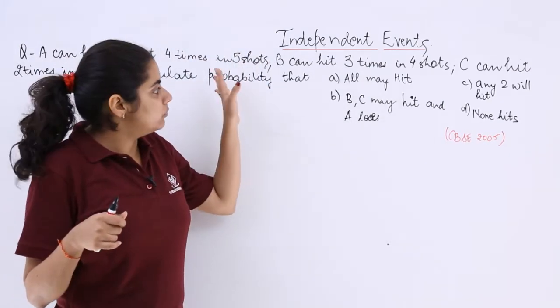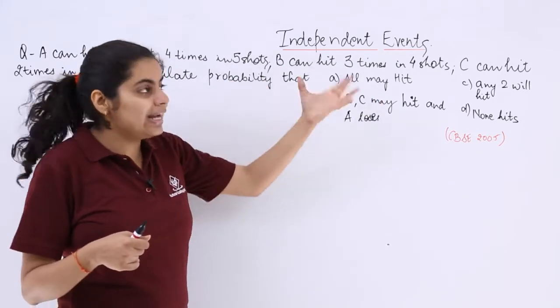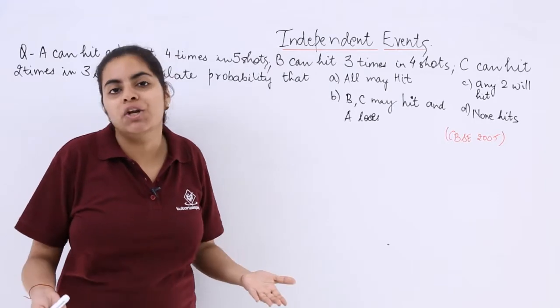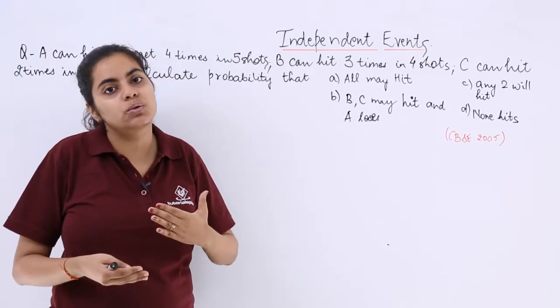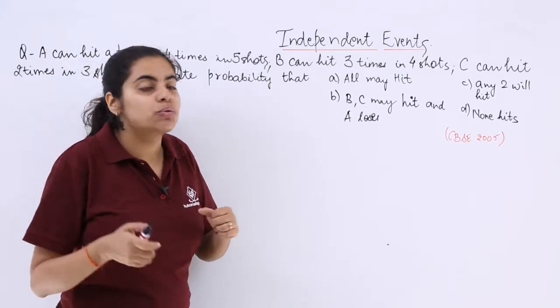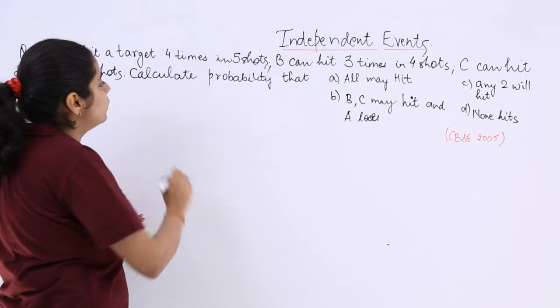So it says there are three persons ABC. They try hitting the target. So sometimes they are successful and sometimes they are not. That means sometimes they hit so they win, but sometimes they are not able to hit so they lose. So we will be framing the probabilities first and then only we can solve.